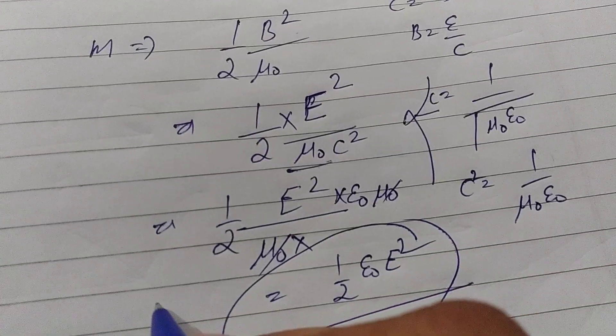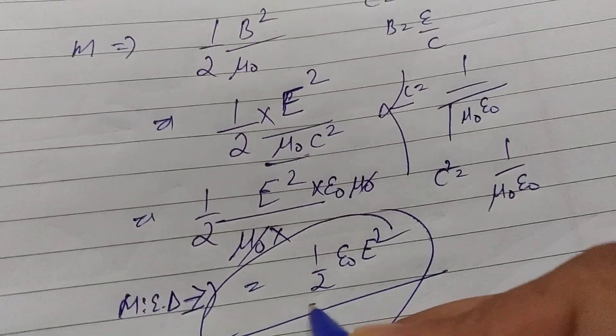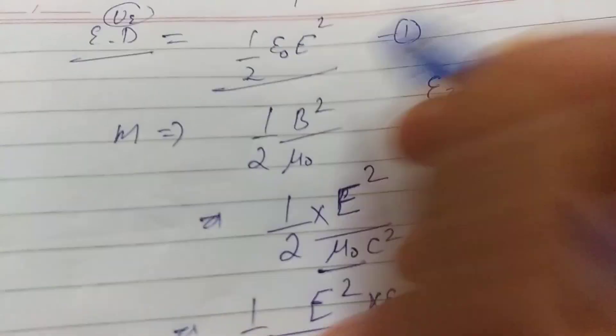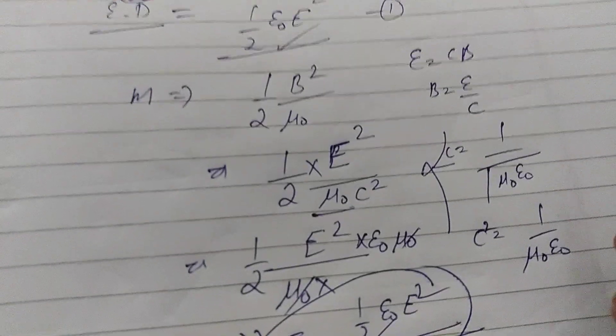So this is also the expression for magnetic energy density - that is ½ε₀E². So both expressions are the same. So if we take the ratio, the answer is just 1.